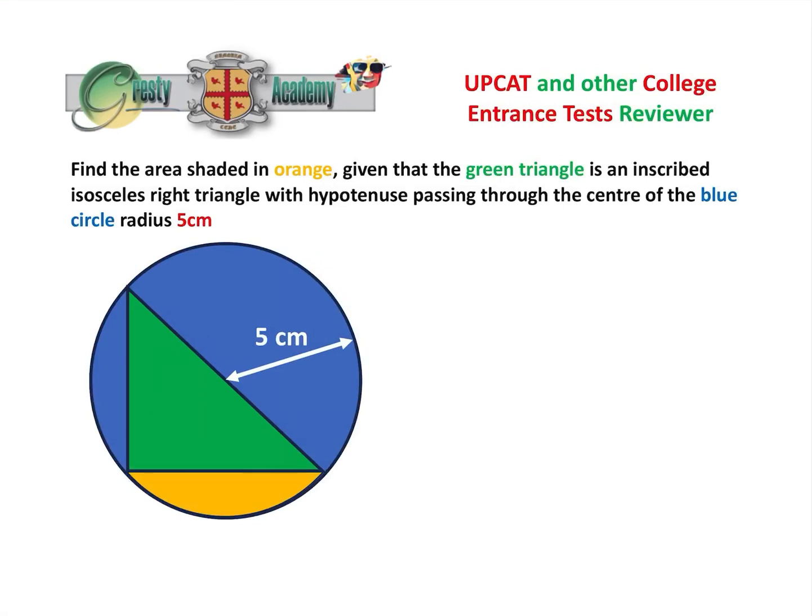This is a fairly common college entrance test type question. We're asked to find the area shaded in orange, this segment here, given that the green triangle is an inscribed isosceles right triangle. Inscribed meaning that the three edges of the triangle all touch the circle, and the hypotenuse passes through the center of the circle here, and the blue circle has a radius of five centimeters.